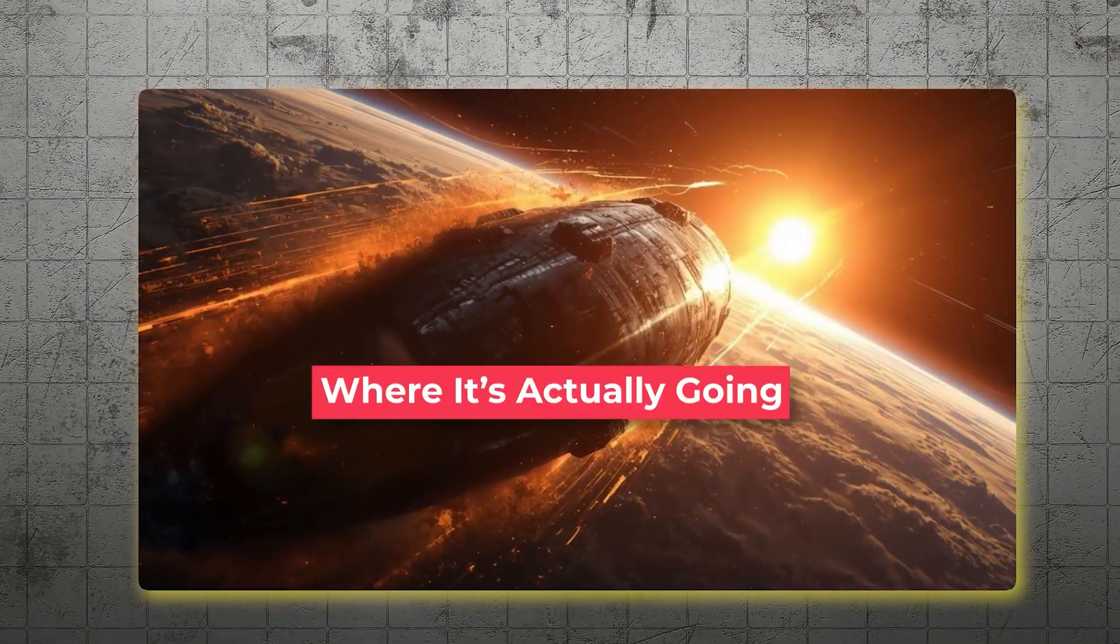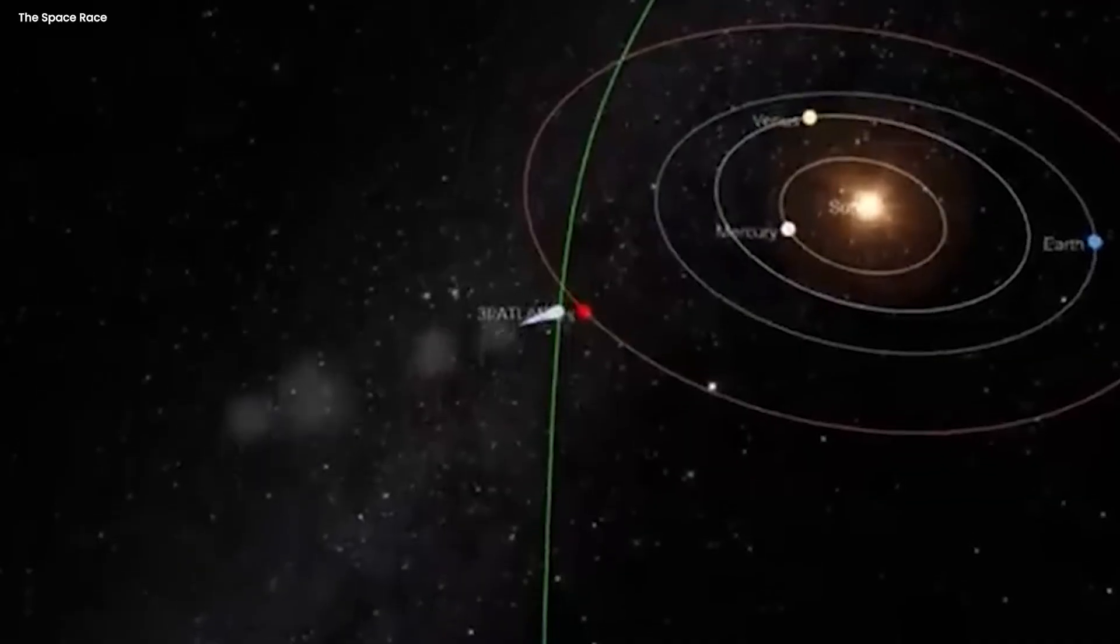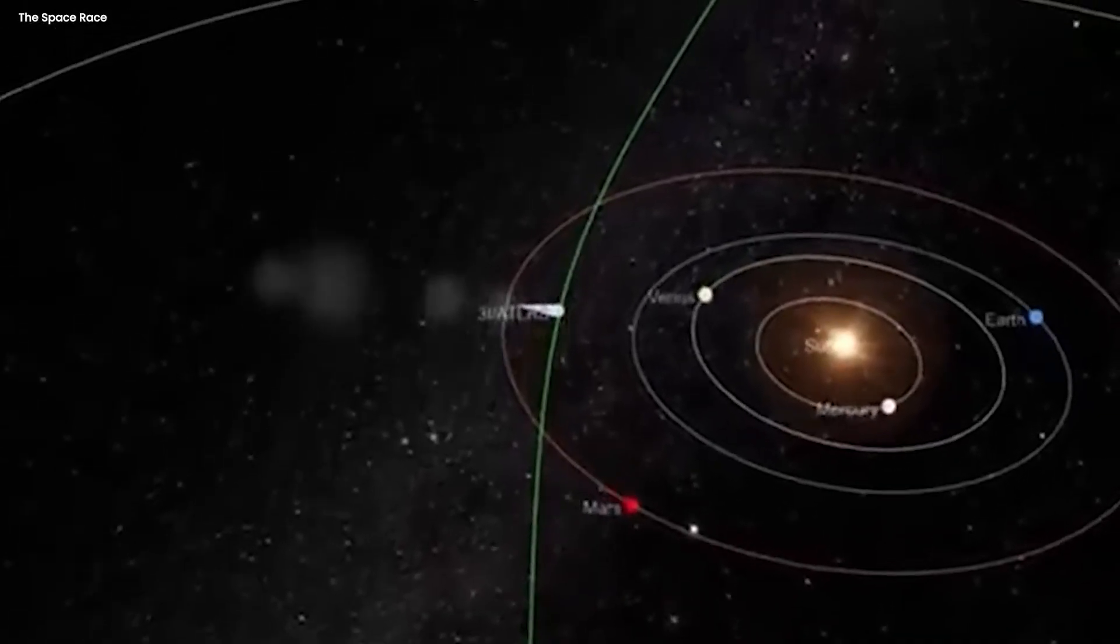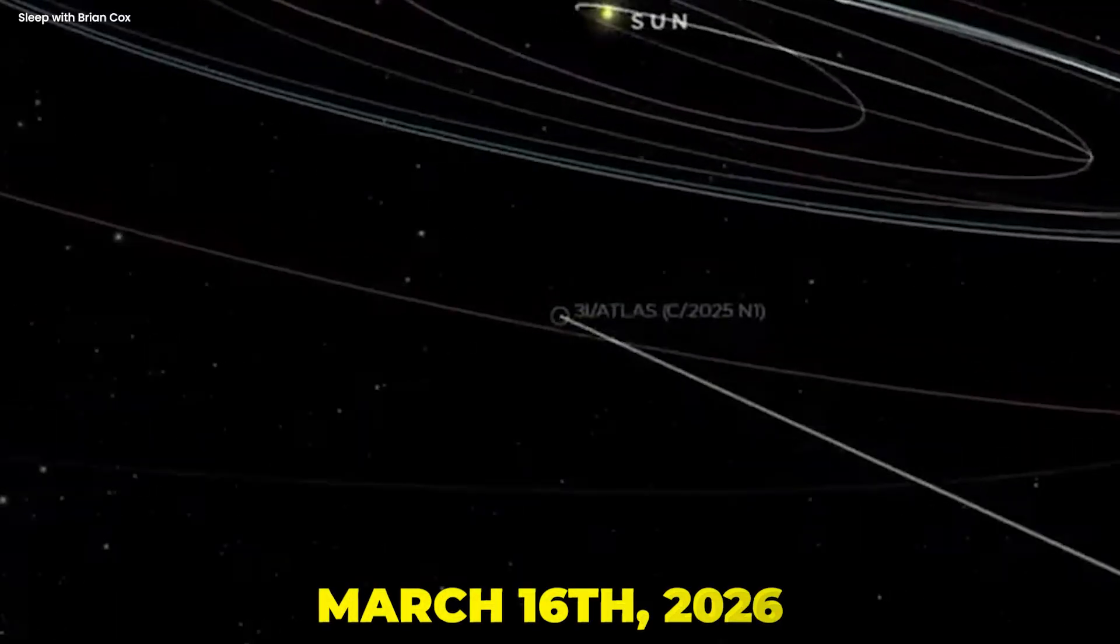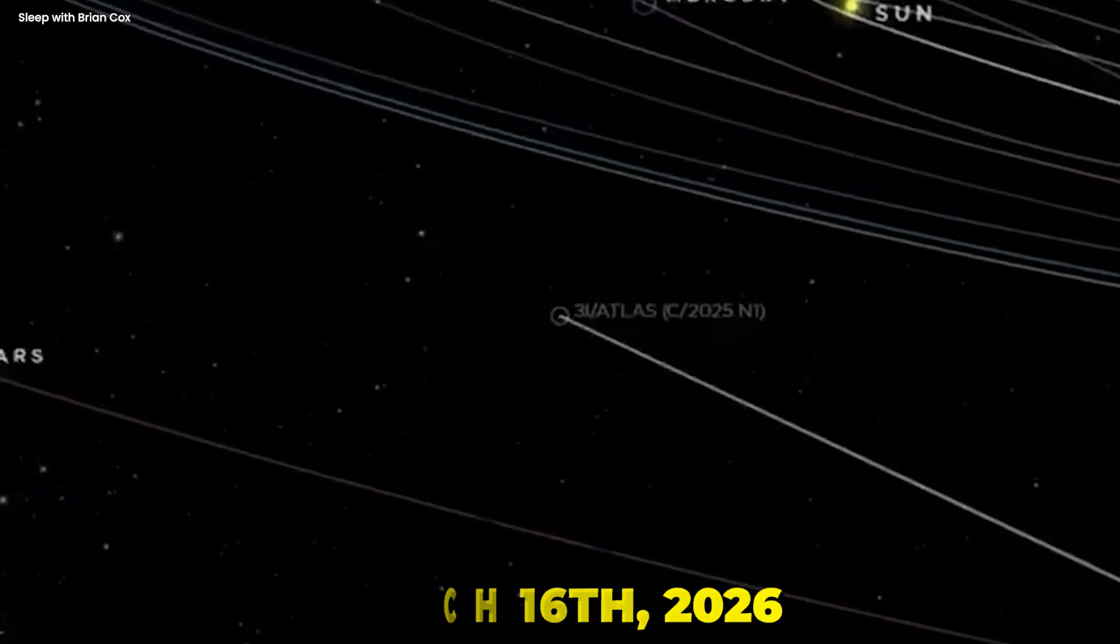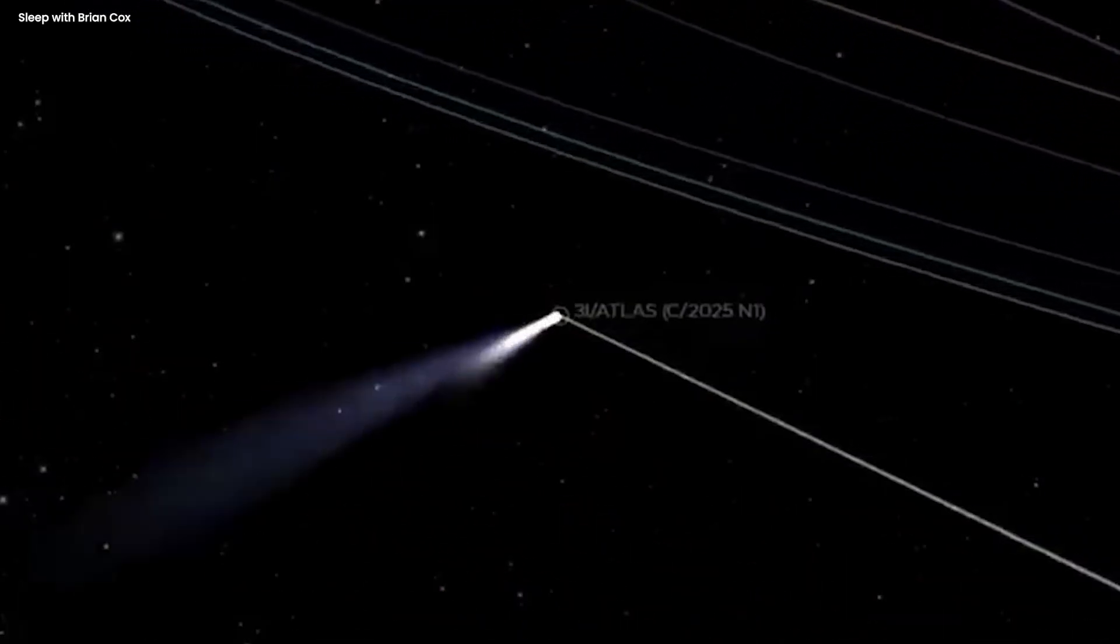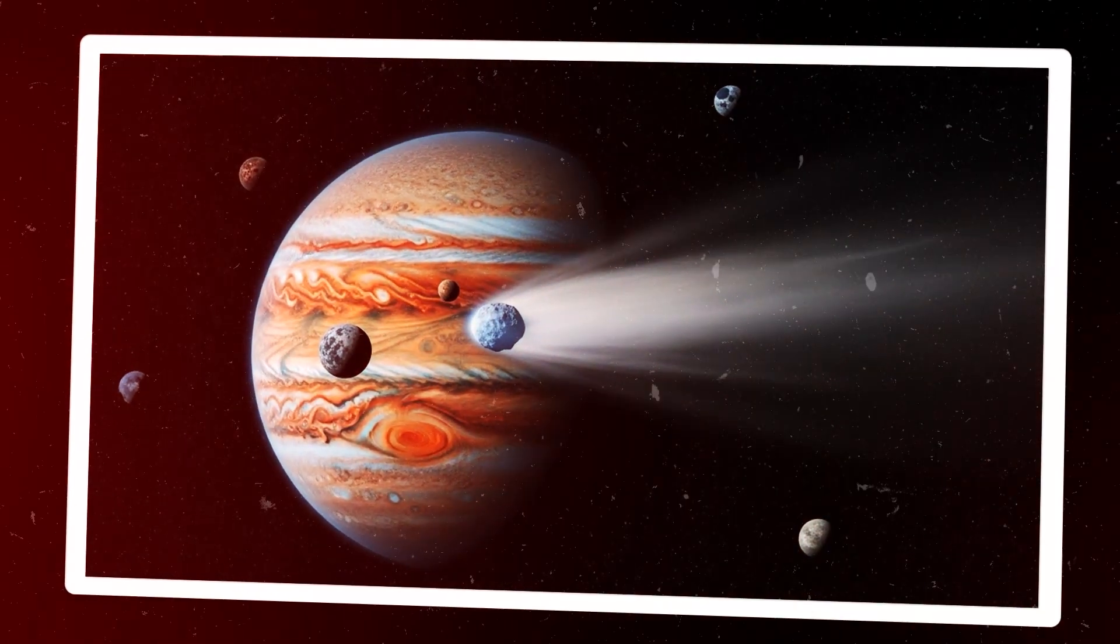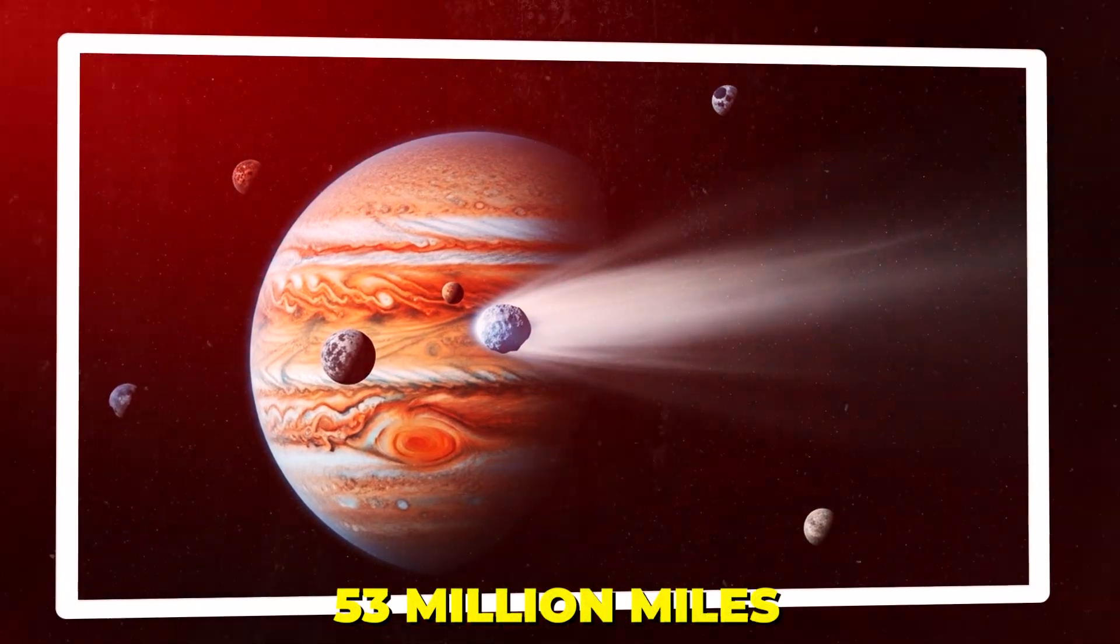Where it's actually going. But if Earth wasn't the target, then what was? Well, let's look at where 3I Atlas is actually going. Because we know exactly where this thing is headed and we know exactly when it's going to get there. On March 16th, 2026, just 82 days from now, 3I Atlas will make its closest approach to the planet Jupiter. And the distance at that encounter will be 53 million miles.